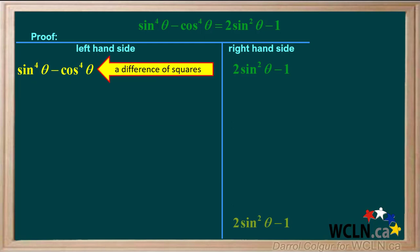We recognize this as a difference of squares, so we can rewrite it as sine squared theta plus cos squared theta times sine squared theta minus cos squared theta.